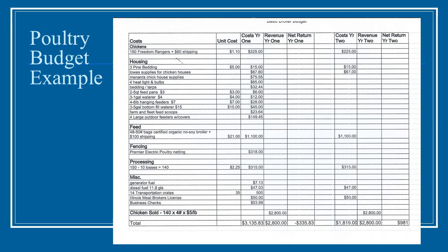The budget is for planning and being thoughtful about what you're going to need to purchase. Maybe looking at your revenue, you need to get those birds up to five pounds before the processor, or try to get six dollars a pound. This is just a planning tool — for poultry, and also if you have another enterprise on the farm, like lamb or an orchard. You would do an enterprise budget for each one of those. This is not just for livestock; it would also be for crops as well.